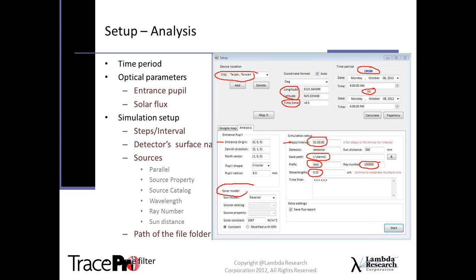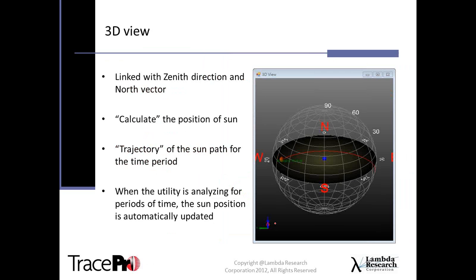For the solar model, I'm setting up a simple parallel model coming into the entrance pupil. You can also specify this as a source property using the built-in source catalog. You can specify the default solar constant — approximately 1,067 for an average across the whole world — and adjust it for cloudy conditions or different locations. You can specify it as constant or modify it with the Earth's radius vector.